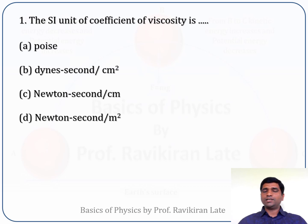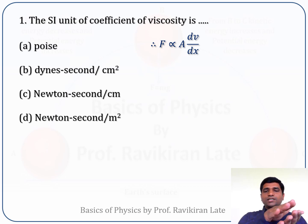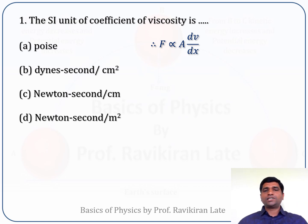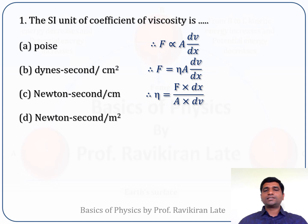Let me brush up some important things from our theory lectures. We know that if a liquid is flowing, the force between two adjacent layers is directly proportional to the area of the layer and directly proportional to the velocity gradient between the two layers. So F is proportional to A times dv/dx. Removing the proportionality sign: F = η × A × dv/dx, where η is called the coefficient of viscosity.